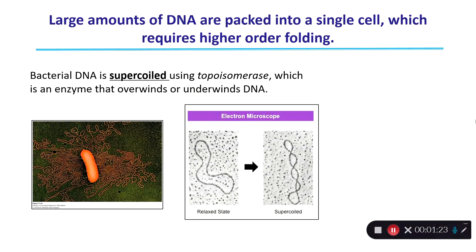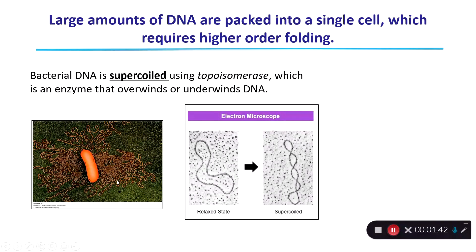Bacterial DNA is supercoiled, which means that it's twisted and twisted and twisted until it collapses on itself. What this image is showing you here is an E. coli cell that has been very gently heated so that the cell remains intact but its contents have started to spill out. The contents that you see here is the genome. Look at how big the genome is — this is one long circular genome that you're viewing under an electron microscope. All of that material has to fit into one very small portion of the cell.